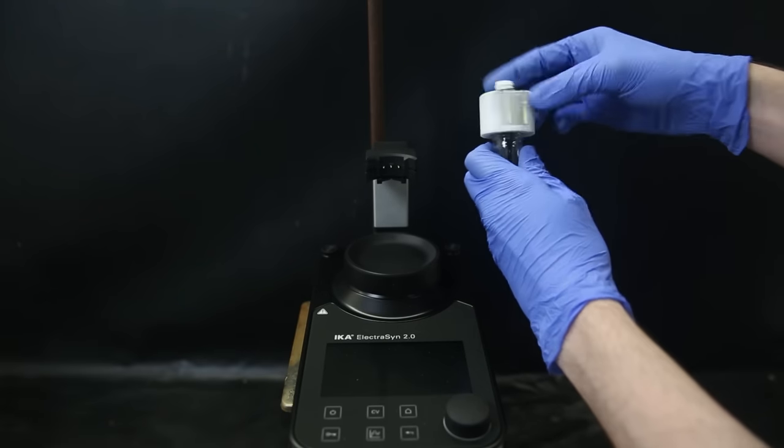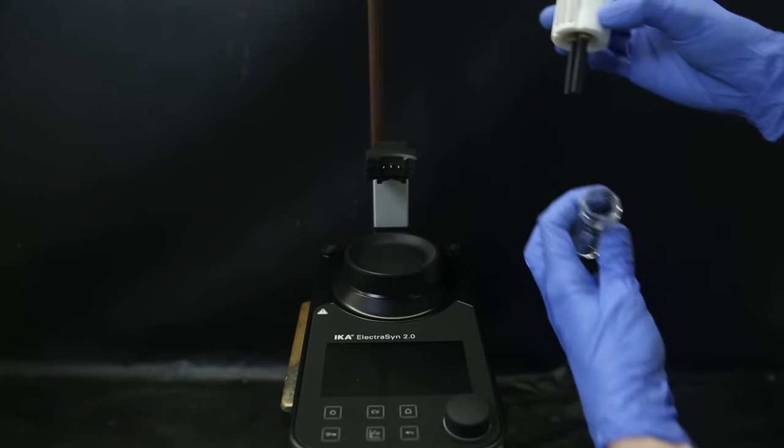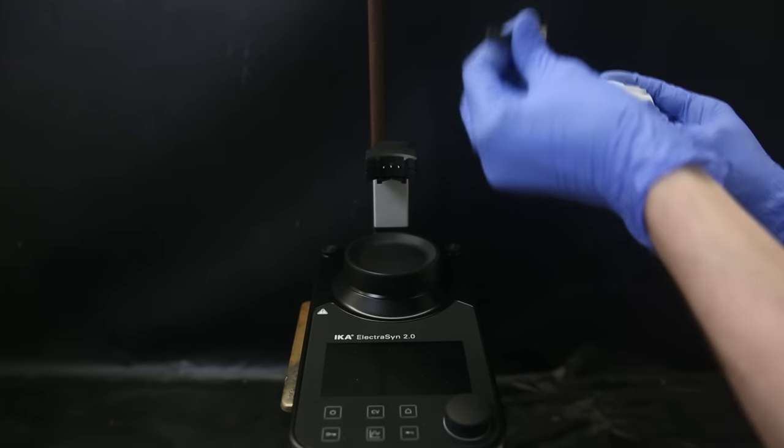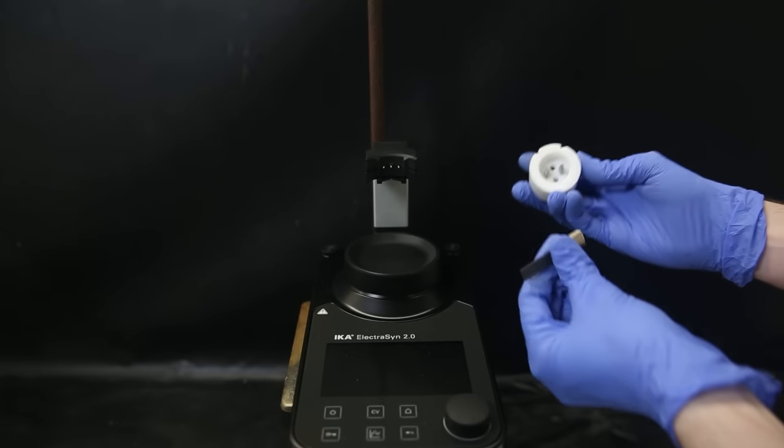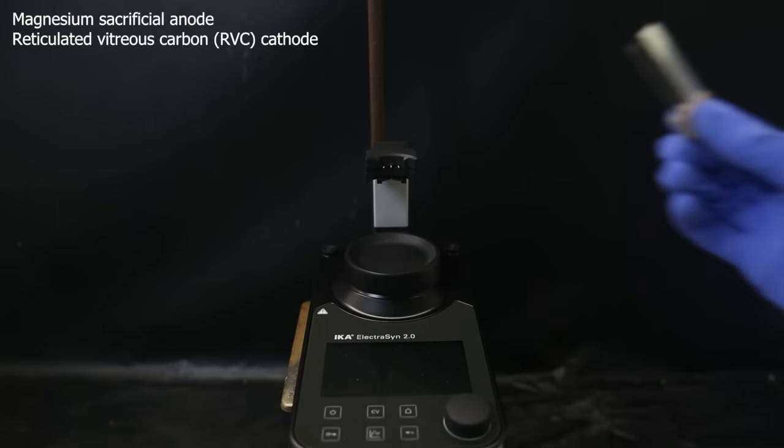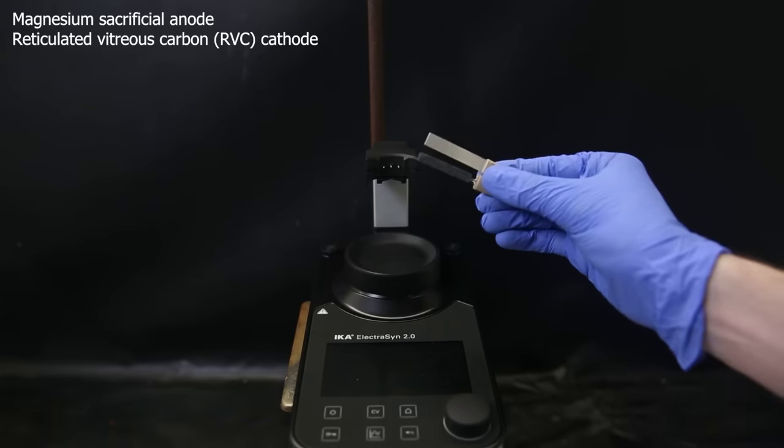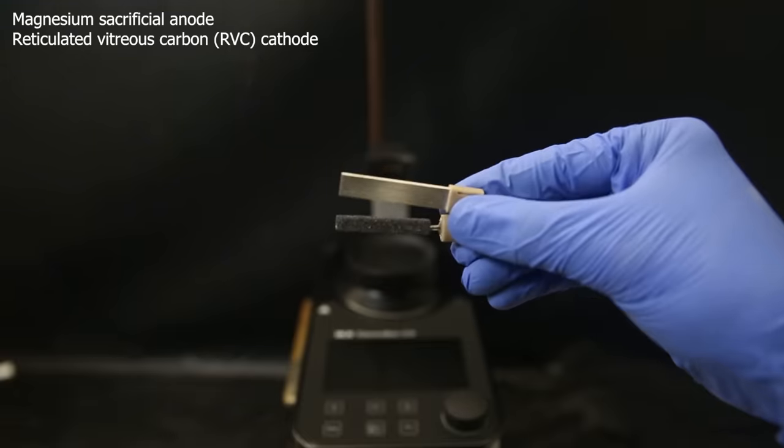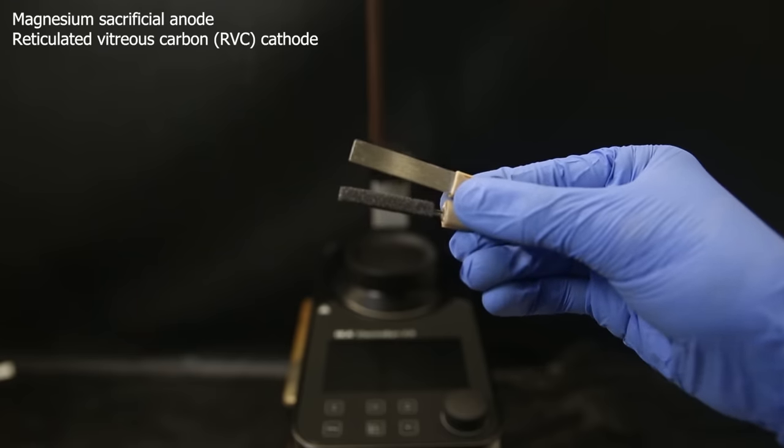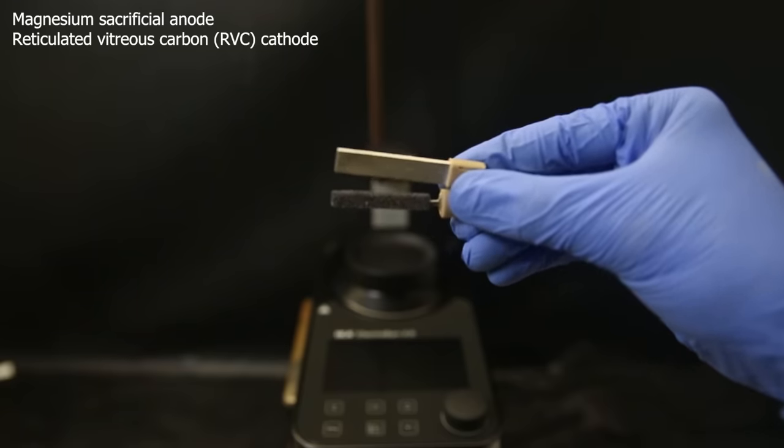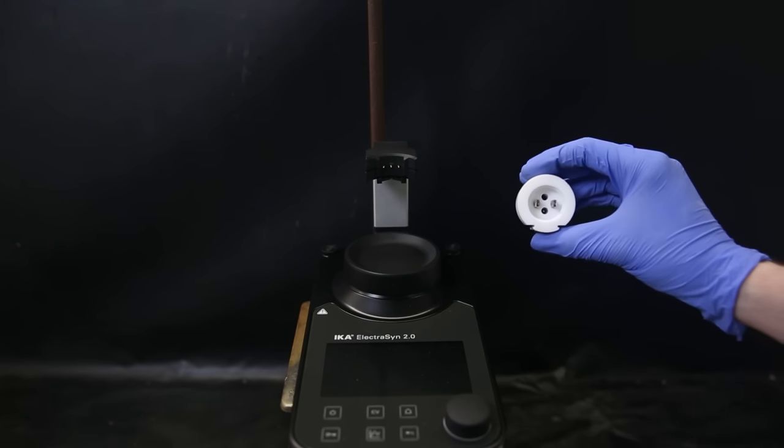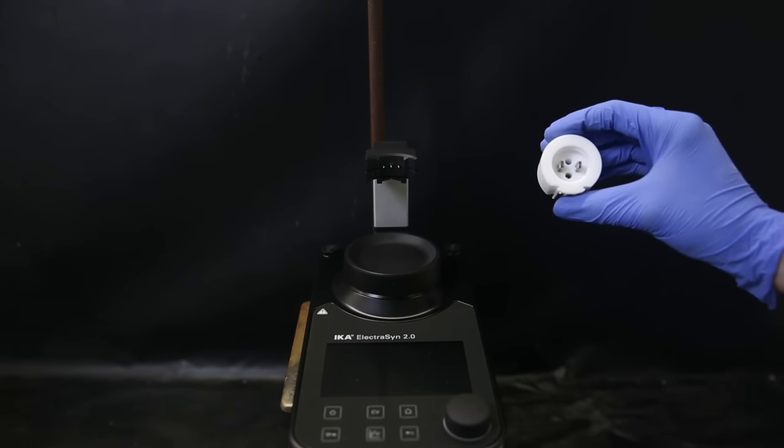The cap to which the electrodes are attached can be screwed off as well, and I have to replace the standard graphite electrodes to the ones I will need for this specific reaction. They just pull out of the top easily. The electrodes I will be using are a magnesium sacrificial anode and a reticulated vitreous carbon cathode, which is basically just porous glassy carbon. It's quite porous and also a little bit fragile. And the magnesium is just a metal stick. These electrodes are from ICA, but you can also attach your own into the clamps if they are cut to the right size.